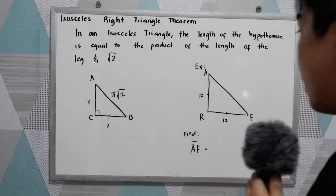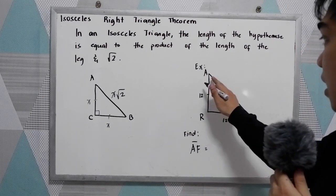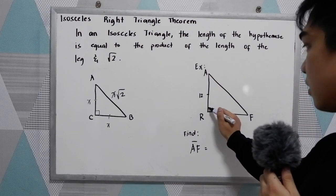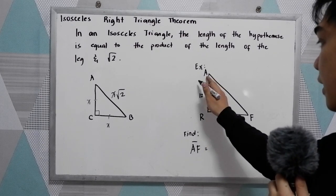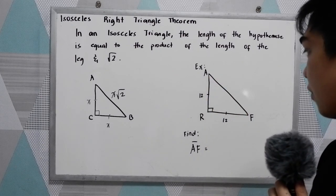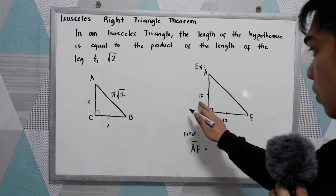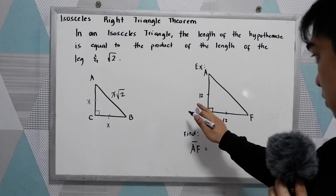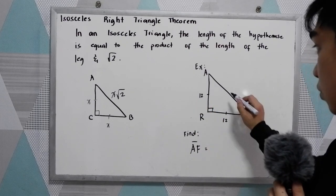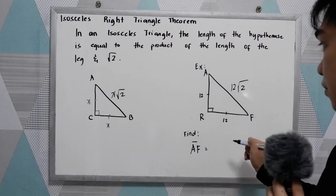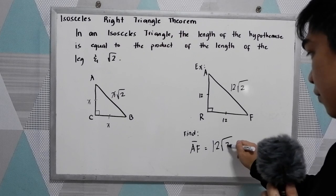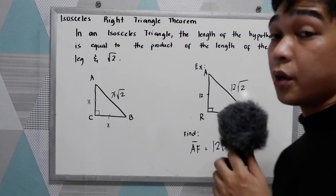Let's have our first example. We have triangle ARF with a right angle. We're going to find AF. Given that our legs measure 12 and 12, AF equals 12√2. The leg multiplied by √2.